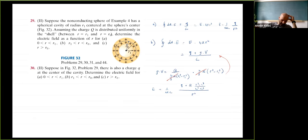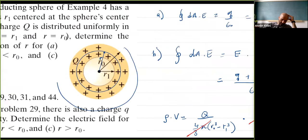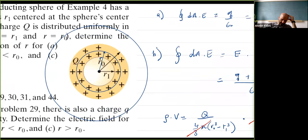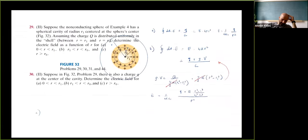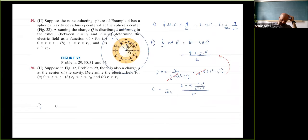Part (c), outside the shell: choose a Gaussian surface outside. E times 4 pi r squared equals (q plus Q) over epsilon-naught, so E equals 1 over (4 pi epsilon-naught) times (q plus Q) over r squared.